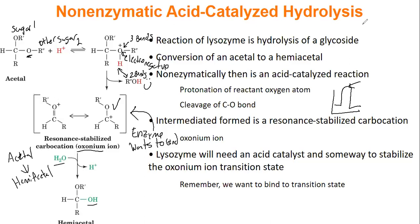How often does the left resonance structure occur? I don't have percentages, but going on chemical intuition I'd say less than 10% of the time. When we talk about resonance structures, even though we draw two different structures, in reality it's just one structure taking on characteristics of both. The carbon has more positive charge than the oxygen, but it's not a complete single bond — it's not 100% that structure.